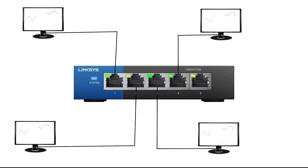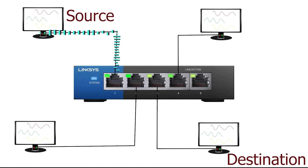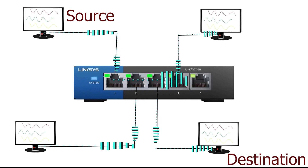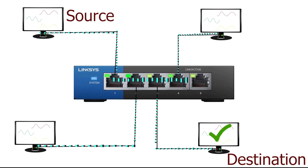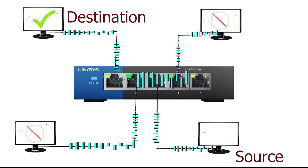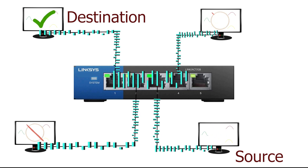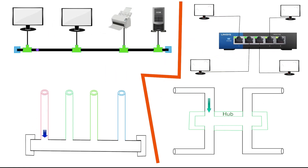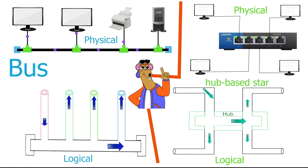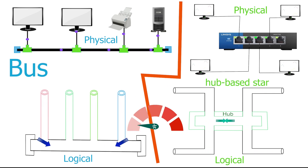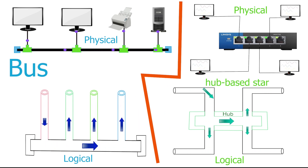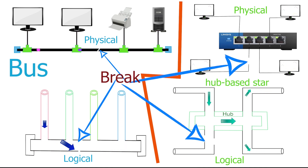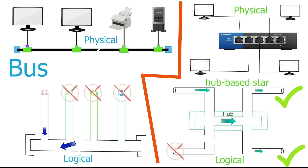Let us first look at a hub. A hub is a multiport repeater. It amplifies incoming signals and forwards them from all other ports, so signals reach all devices. The destination device picks the signals; all other devices discard them. Since signals sent by one device reach all devices, it creates a logical bus topology. Upgrading a coaxial bus topology to a hub-based star topology provides no logical benefits — both face the same collision issue. The only benefit is that a cable break affects only a single node, not the entire network.